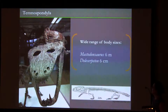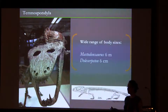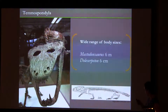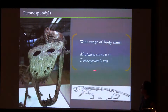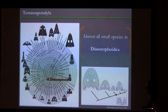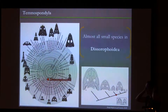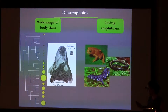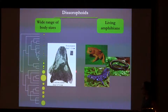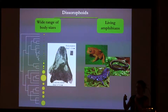What I want to stress is that temnospondyls presented a wide range of body sizes, ranging from the huge Mastodonsaurus with about 6 meters length, to the tiny Elcaltepheton with only 6 centimeters length. Within visorophoids we also find a wide range of body sizes — here in these yellow circles are the relative skull sizes of the different species, from the largest Keloma at about 17 centimeters to the tiny Doleserpeton with a skull of less than 2 centimeters.